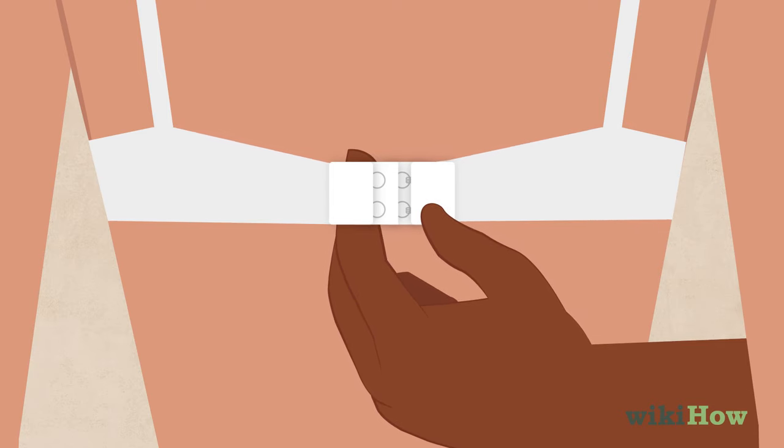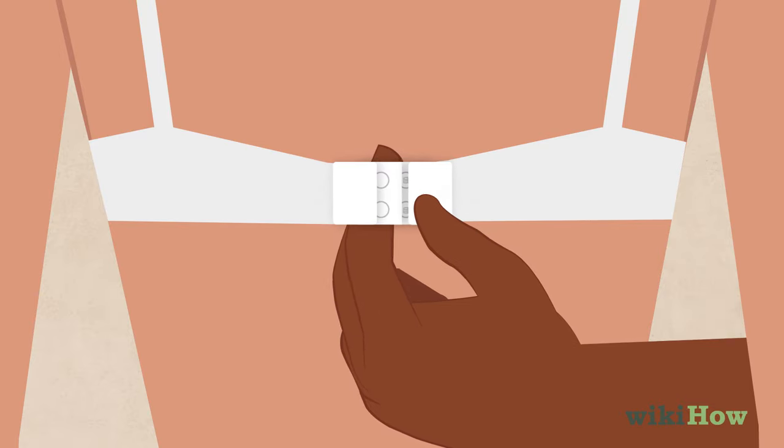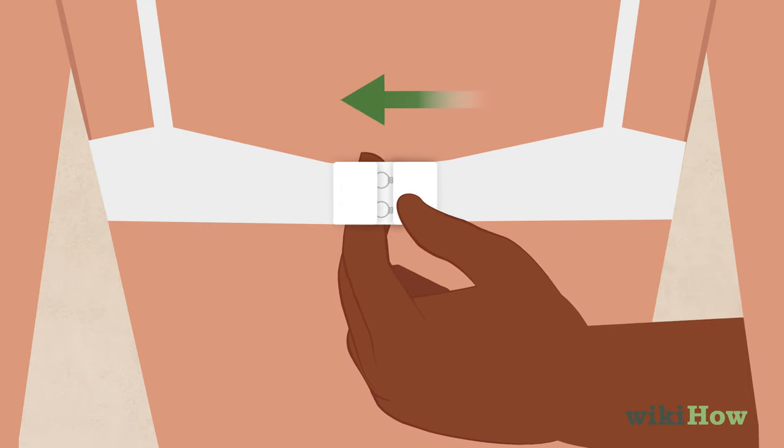Then, pinch the clasp between your thumb and two fingers. Keep pinching and slide your thumb forward to unhook the clasp, almost like you're snapping but with three fingers.